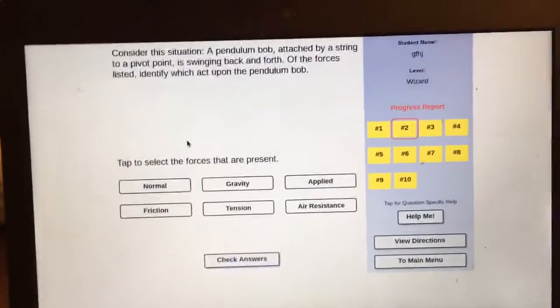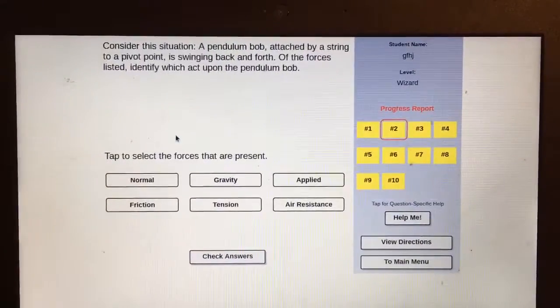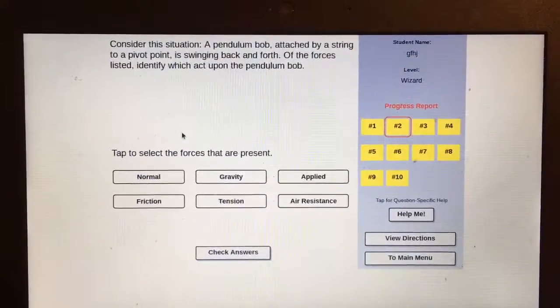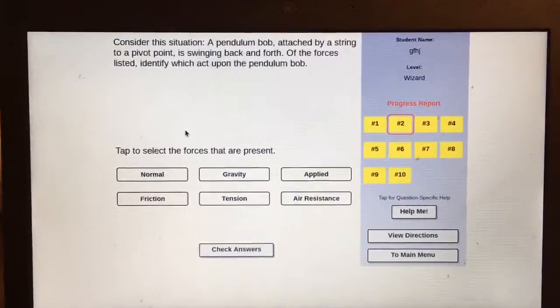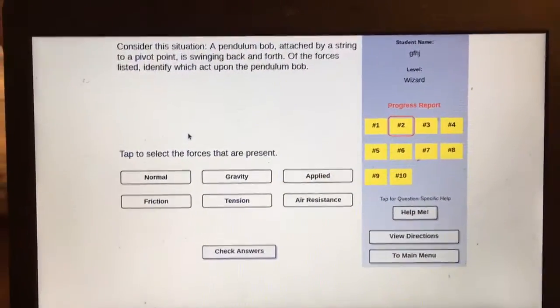All right, so here's an example of the classwork for today. This one says consider the situation: a pendulum bob attached by a string to a pivot point is swinging back and forth. Of the forces listed, identify which ones act on the pendulum bob.